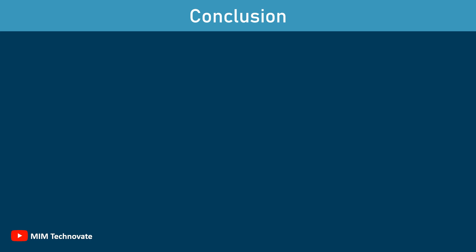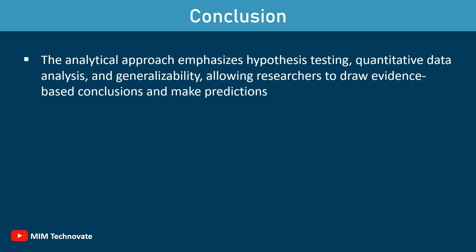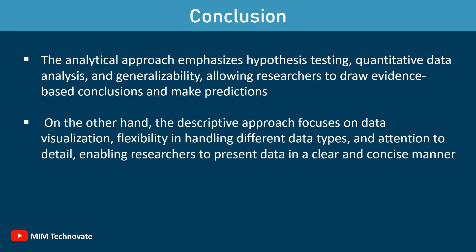Conclusion. Analytical and descriptive researches have distinct characteristics that make them suitable for different research purposes. Analytical research emphasizes hypothesis testing, quantitative data analysis, and generalizability, allowing researchers to draw evidence-based conclusions and make predictions. On the other hand, descriptive research focuses on data visualization, flexibility in handling different data types, and attention to detail, enabling researchers to present data in a clear and concise manner.